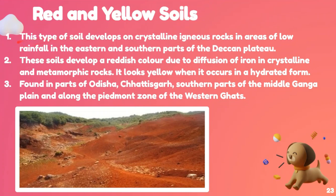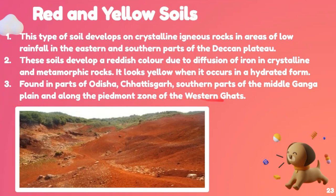Red and yellow soil develops on crystalline igneous rocks in areas of low rainfall in the eastern and southern parts of the Deccan Plateau. This soil develops a reddish color due to the diffusion of iron in crystalline and metamorphic rocks. It looks yellow when it occurs in a hydrated form. It is found in parts of Odisha, Chhattisgarh, southern parts of the Middle Ganga Plains, and along the Piedmont Zone of the Western Ghats.